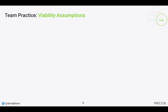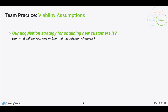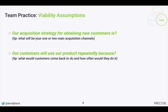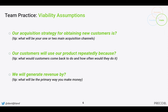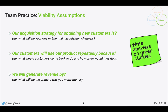Next, let's talk about some of the viability assumptions you're making. Our acquisition strategy for obtaining new customers is — what are the one or two main acquisition channels for your product or service? Our customers will use our product repeatedly because — what would your customers want to come back to do and how often? We will generate revenue by — what's the primary way you're going to make money? Write these answers on green stickies.